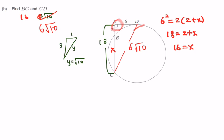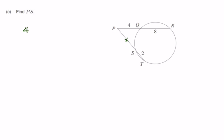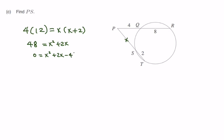Let's move on. Find PS — we call PS as X. Once again, outer times whole: 4 times 12 must equal X times (X plus 2). This gives us a quadratic equation. Putting everything onto one side: X squared plus 2X minus 48 equals 0. Factoring gives (X plus 8)(X minus 6). Therefore X equals negative 8 or 6, and of course 6 is the answer because we cannot have negative dimensions. That's our answer for PS.